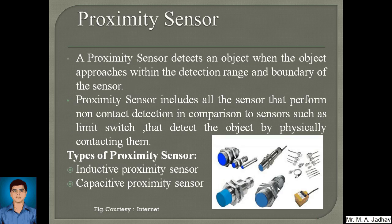So basically, what is a proximity sensor? A proximity sensor detects an object when the object approaches within the detection range and boundary of the sensor. Proximity sensors include all sensors that perform non-contact detection, in comparison to sensors such as limit switches which detect the object by physically contacting them. So basically, a proximity sensor senses an object without touching it.